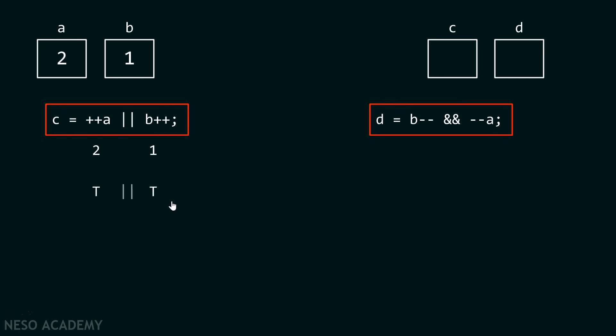True or true is equal to true. Therefore, value stored inside c would be equal to 1. As c is an integer variable, it will store an integer value. Now, after completion of this expression post-increment will happen. That means, this value now becomes 2.